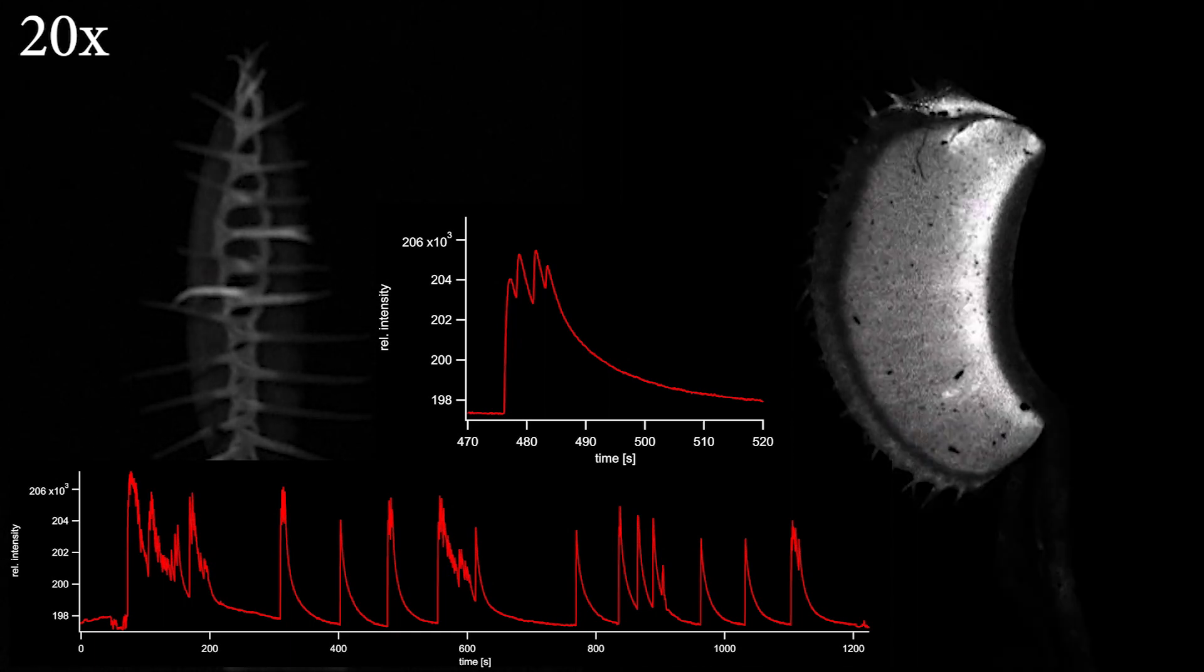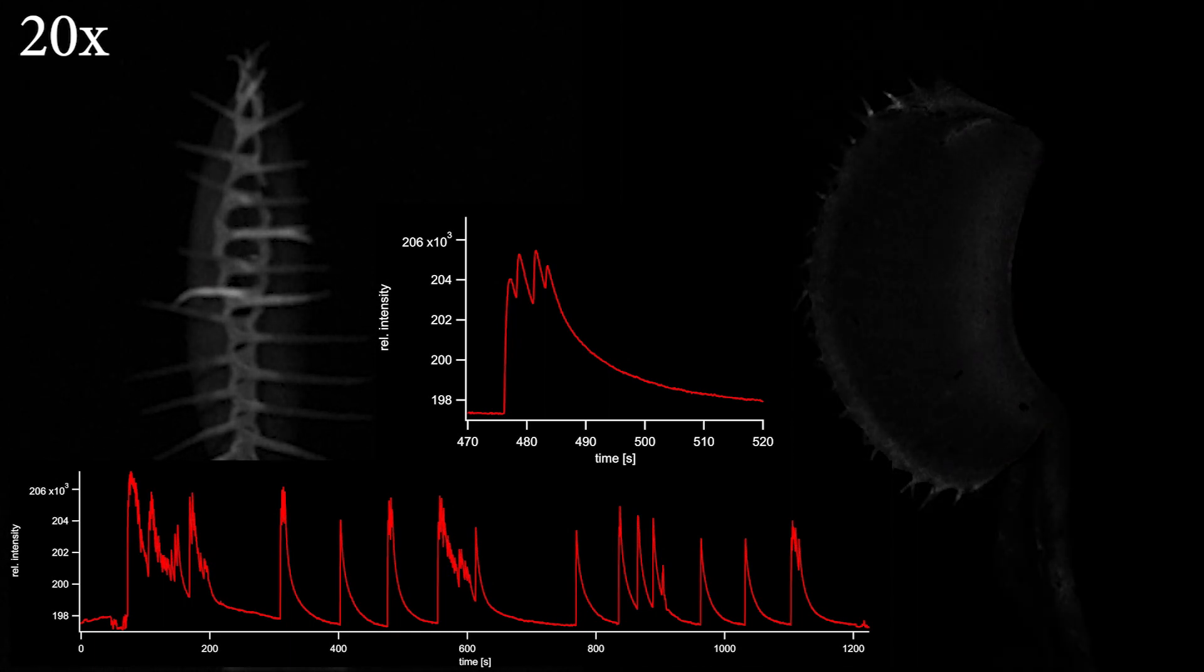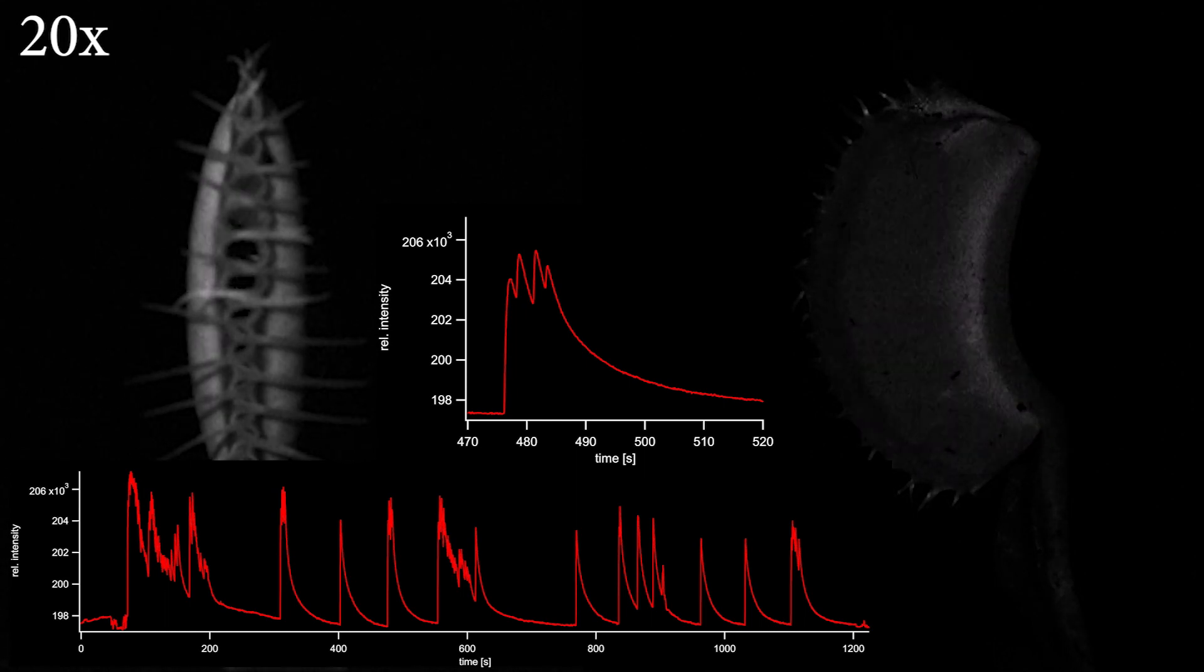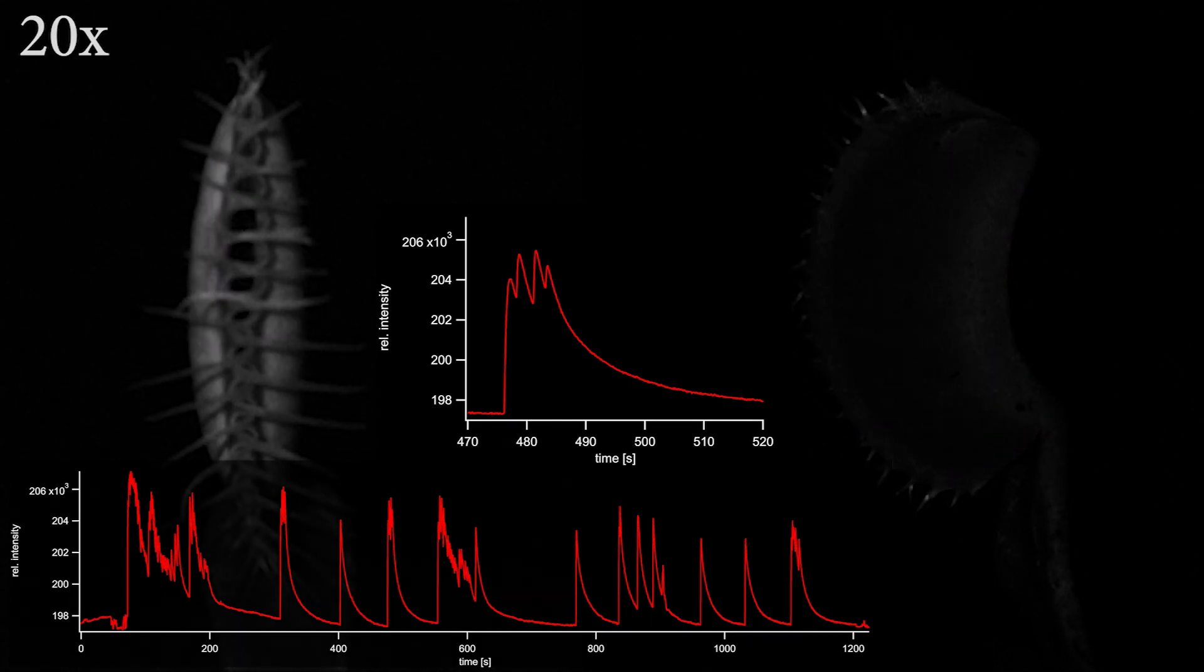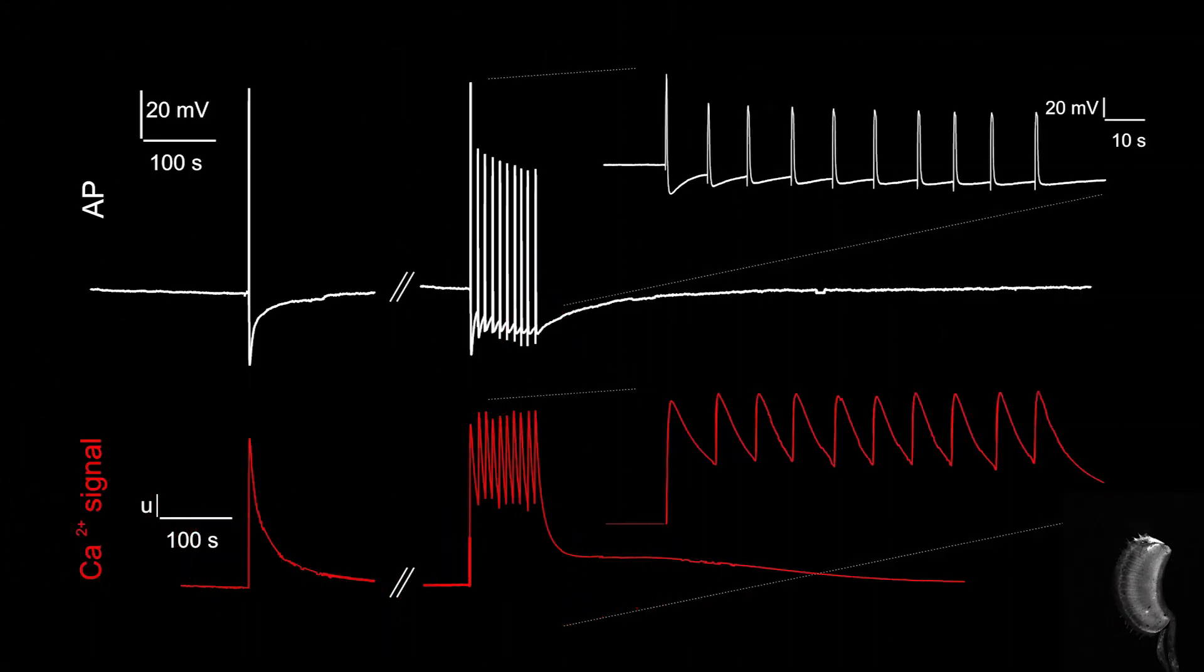The ant eagerly trying to escape the closed trap repetitively stimulates the sensory hairs, causing real fireworks of calcium signals. When action potentials and calcium waves were recorded side by side, we found both signals well synchronized and traveling at the same speed.